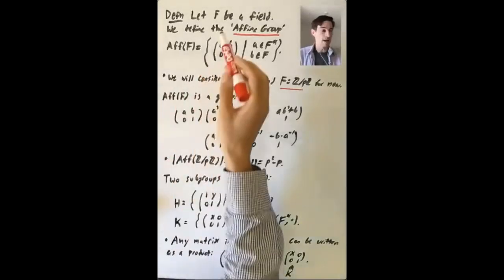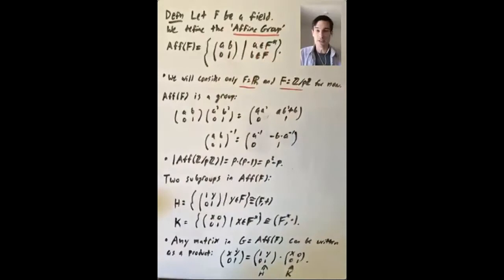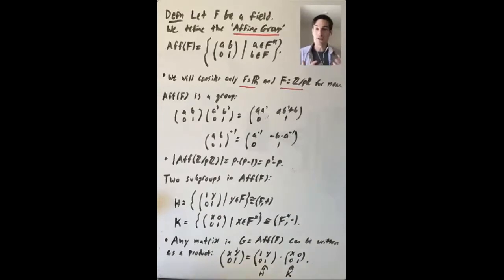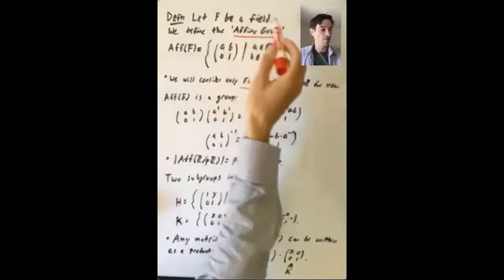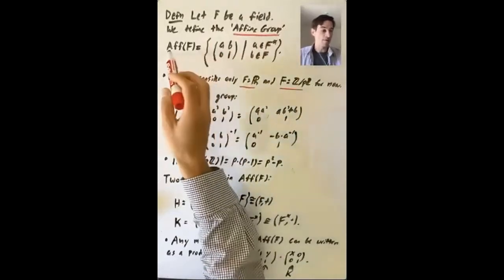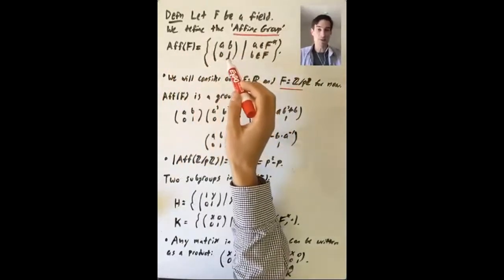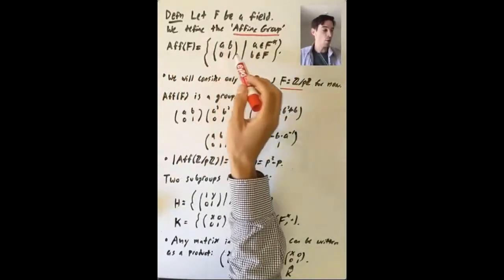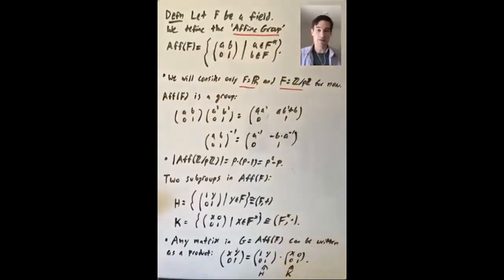I want to start by talking about an example that Conrad uses in his notes quite frequently, called the affine group, or the group of two-by-two affine matrices. This is a matrix group that represents certain nice geometric transformations. We let F be a field, and define the affine group over F to be the set of two-by-two matrices [A, B; 0, 1], where A is any non-zero element of F and B is any element of F.